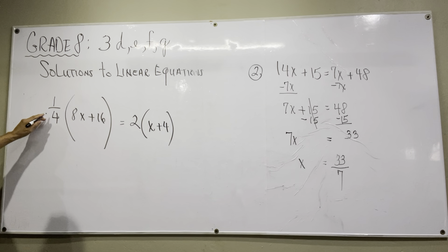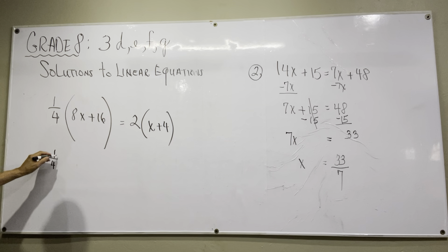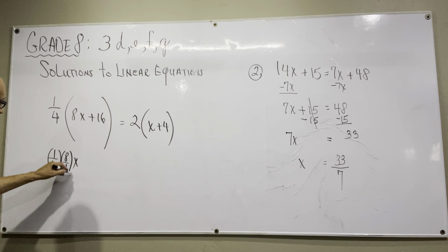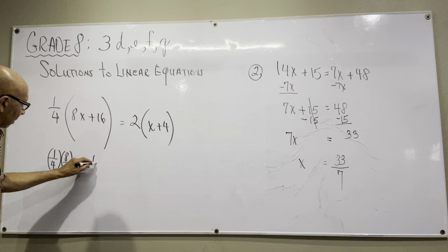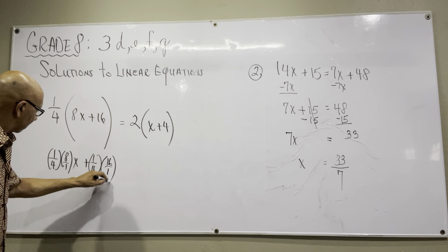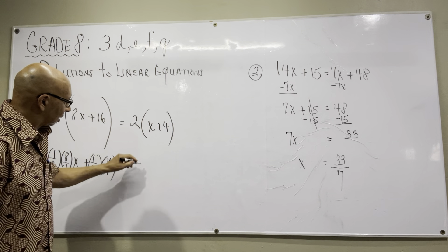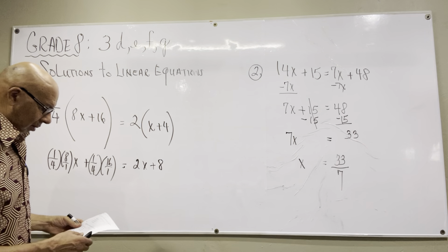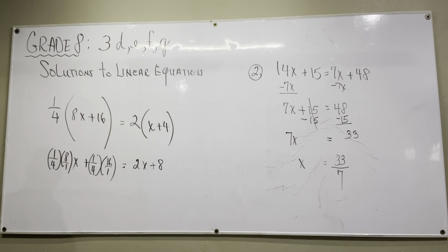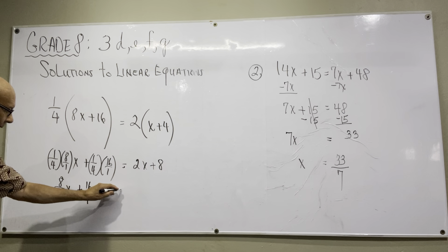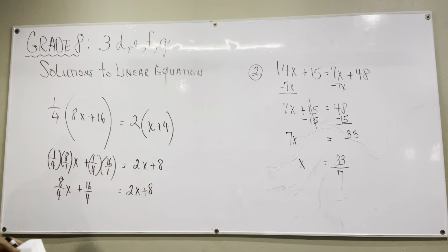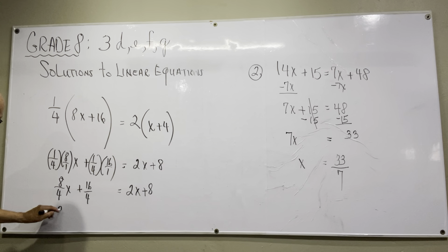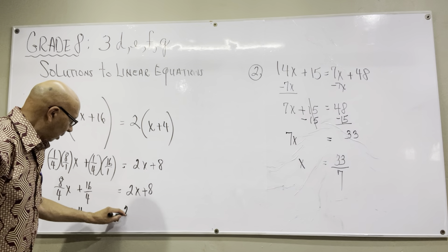So one-fourth times 8 over 1 times x, plus one-fourth times 16 over 1, equals 2x plus 8 — because 2 times x is 2x and 2 times 4 is 8. For the left side: 8 over 4 times x plus 16 over 4. Since 8 over 4 is 2 and 16 over 4 is 4, the left side simplifies to 2x plus 4. So now we have 2x plus 4 equals 2x plus 8.